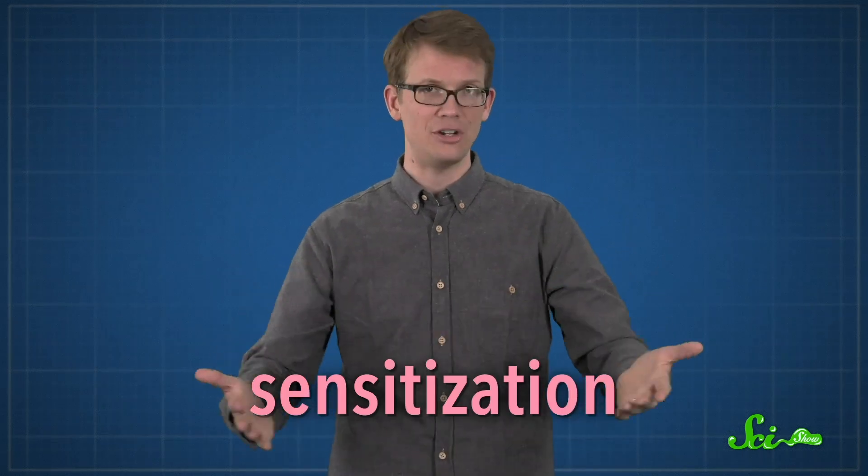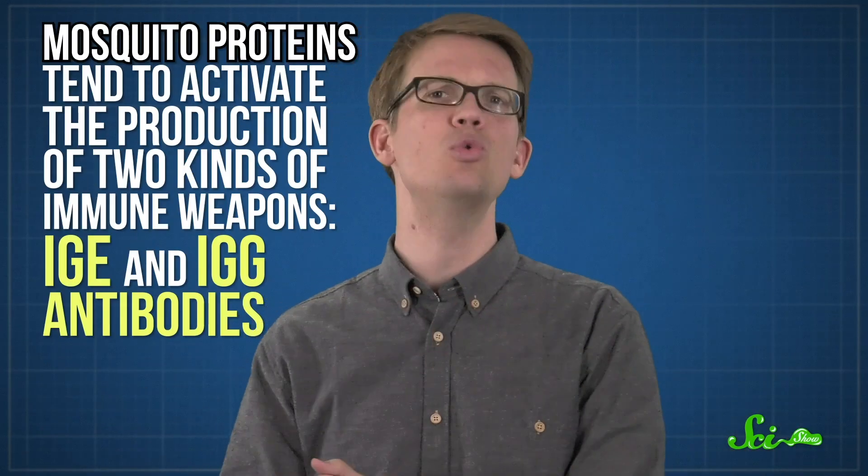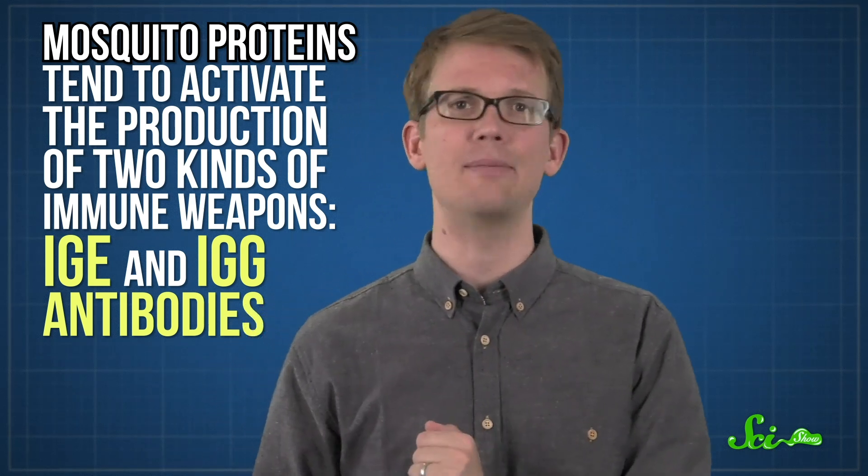Your immune system learns to recognize these proteins as foreign, and it primes specialized cells so that next time you're bitten, your body can launch a rapid immune attack. This is what's known as sensitization. Specifically, mosquito proteins tend to activate the production of two kinds of immune weapons: IgE and IgG antibodies.